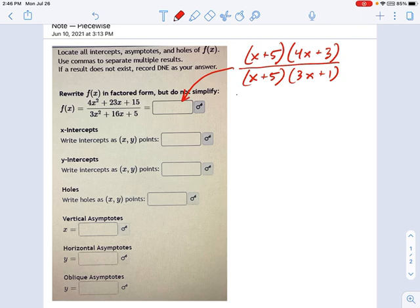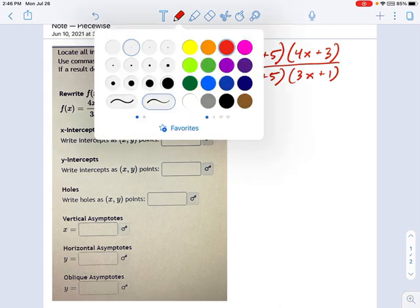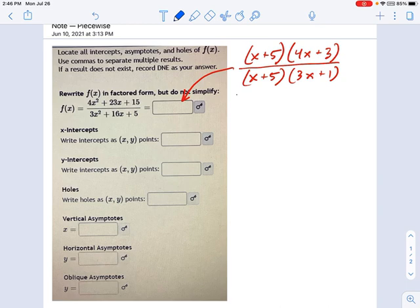So once you have everything factored, you're ready to get into the real meat of the problem, which is first we're going to find the x-intercepts, and then the y-intercepts, the holes, and so on. And what I like to do, actually, is I like to start with the holes of the function.